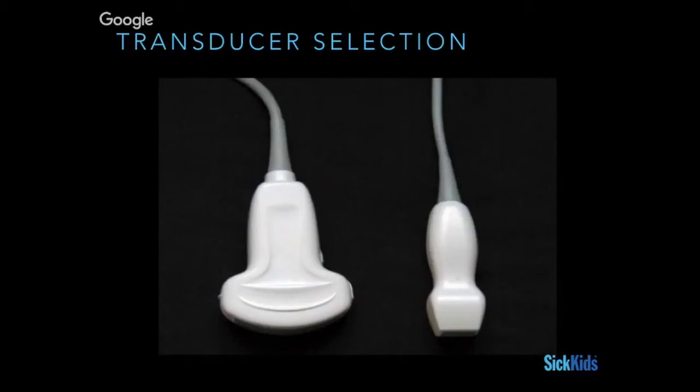Why do we use these two transducers — both low frequency? You covered knobology recently. The obvious difference is that the curvilinear has a bigger footprint. The superficial answer is that we like using a phased array in kids because it fits in tight spaces, while the curvilinear is more adaptable in adults. But what is the actual essential difference between a curvilinear probe and a phased array probe?